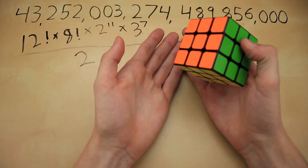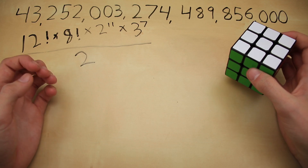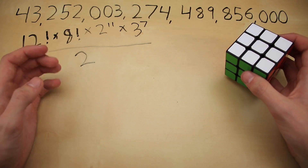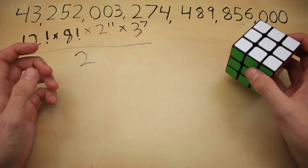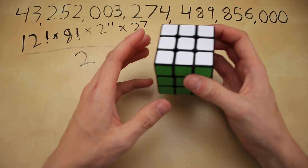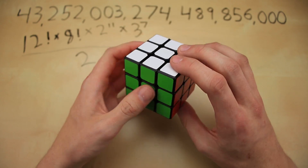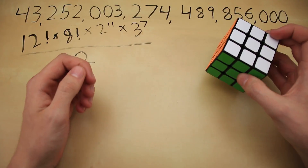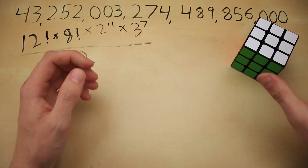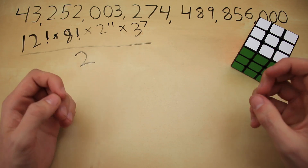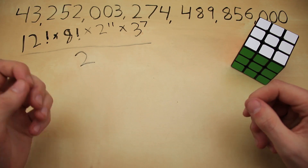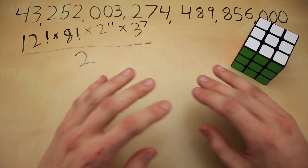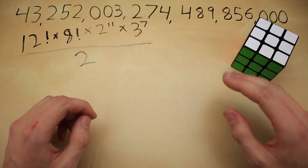So that is how you calculate 43 quintillion, 252 quadrillion, 3 trillion, 274 billion, 489 million, 856 thousand — or the exact number of permutations on a standard Rubik's Cube. I hope you guys enjoyed and especially hope you learned something from this video. If you're confused about anything, be sure to leave a comment down below, because I can probably explain it a little bit better in text if there's any part in particular that's confusing you.